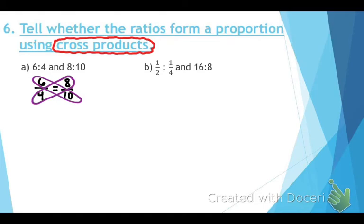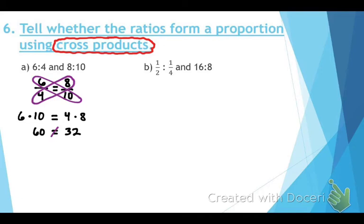For problem A, we have 6 over 4 equals 8 over 10. Using cross products, circle diagonally. Drop down the equal sign: 6 times 10 on the left, 4 times 8 on the right. That gives 60 and 32. Those do not equal each other, so no, they do not form a proportion.